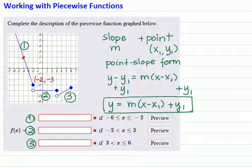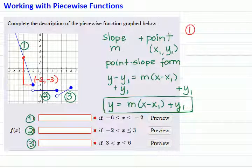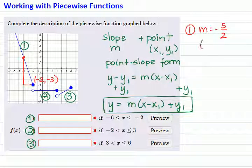The slope between the two points is down 5 and to the right 2. So for part 1, the slope is negative 5 over 2.